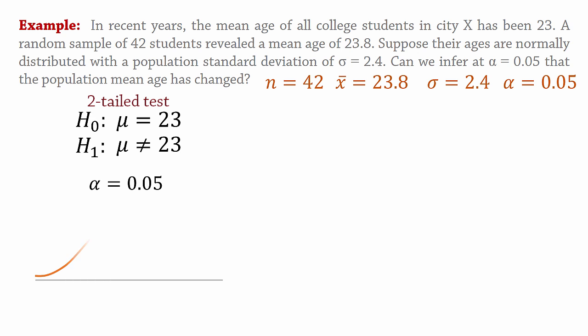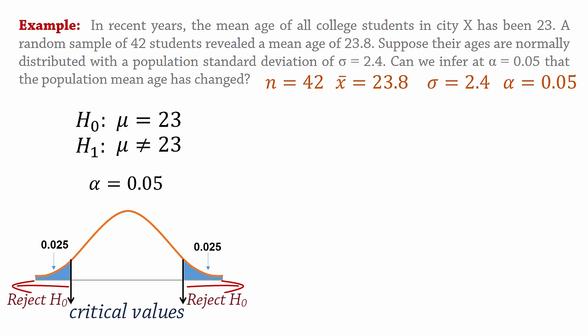Since this is a two-tailed test, the rejection region will be in both tails of the distribution. So we divide alpha by 2 to have 0.025 in each tail. Next we find the critical values, that is the values that separate the rejection region from the non-rejection region.